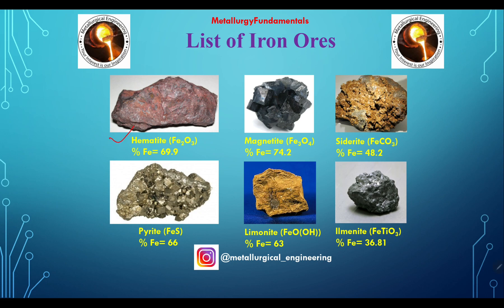First is hematite, Fe₂O₃, with iron percentage of 69.9%. Magnetite is Fe₃O₄ with iron percentage 74.2%. Third is siderite, FeCO₃, with iron percentage 48.2%. Pyrite is FeS with iron percentage 66%.